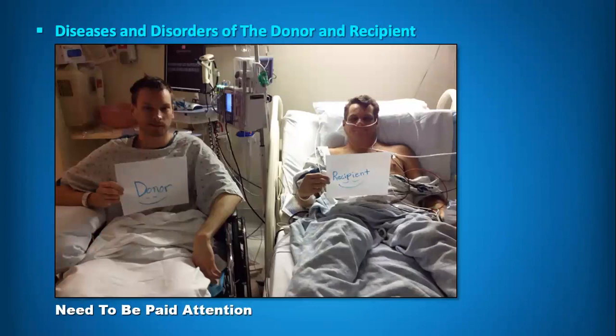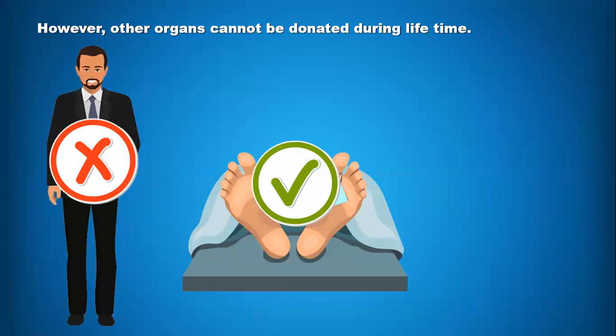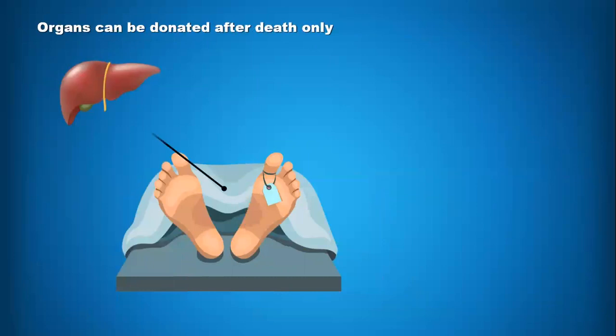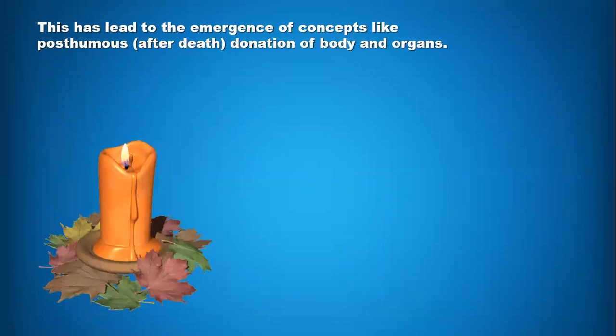One person cannot donate both kidneys while alive. However, certain organs cannot be donated during the lifetime and can only be donated after death — for example, liver, heart, and eyes. This is called posthumous donation, which has now increased with people from India as well voluntarily registering for organ and body donation.